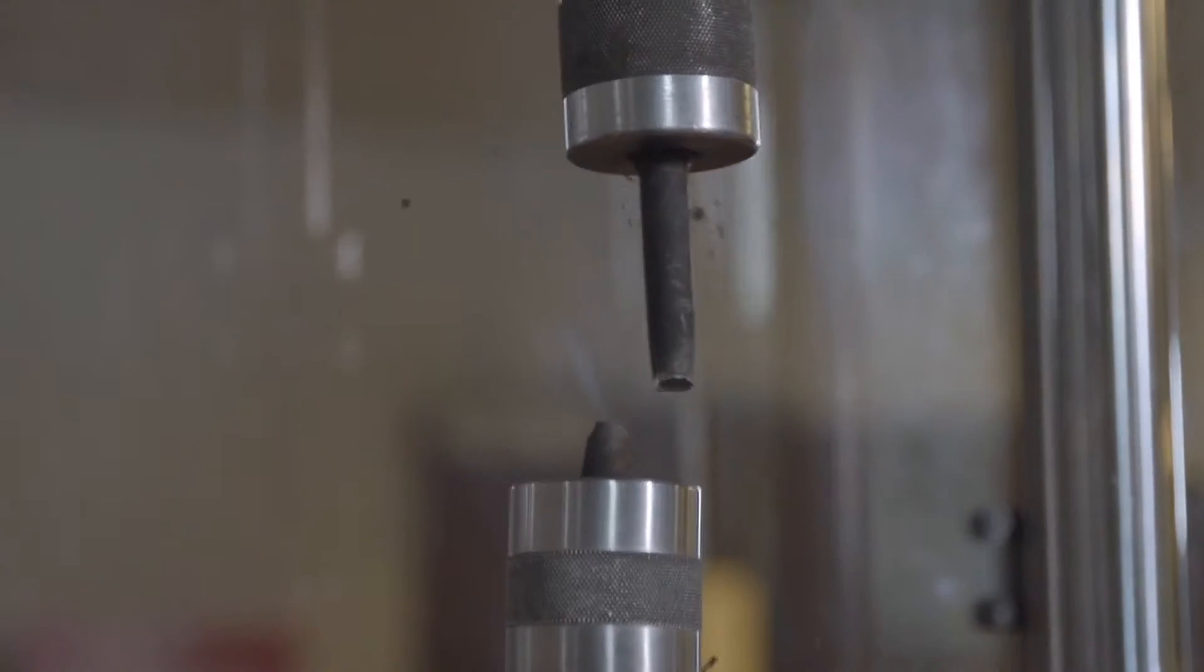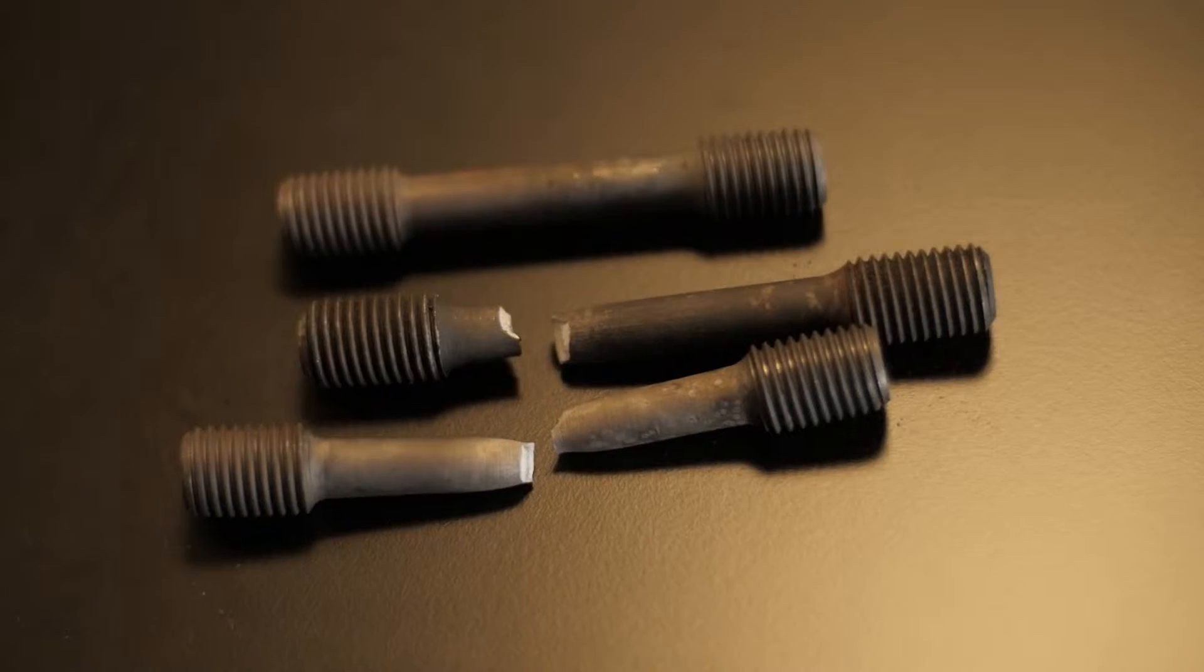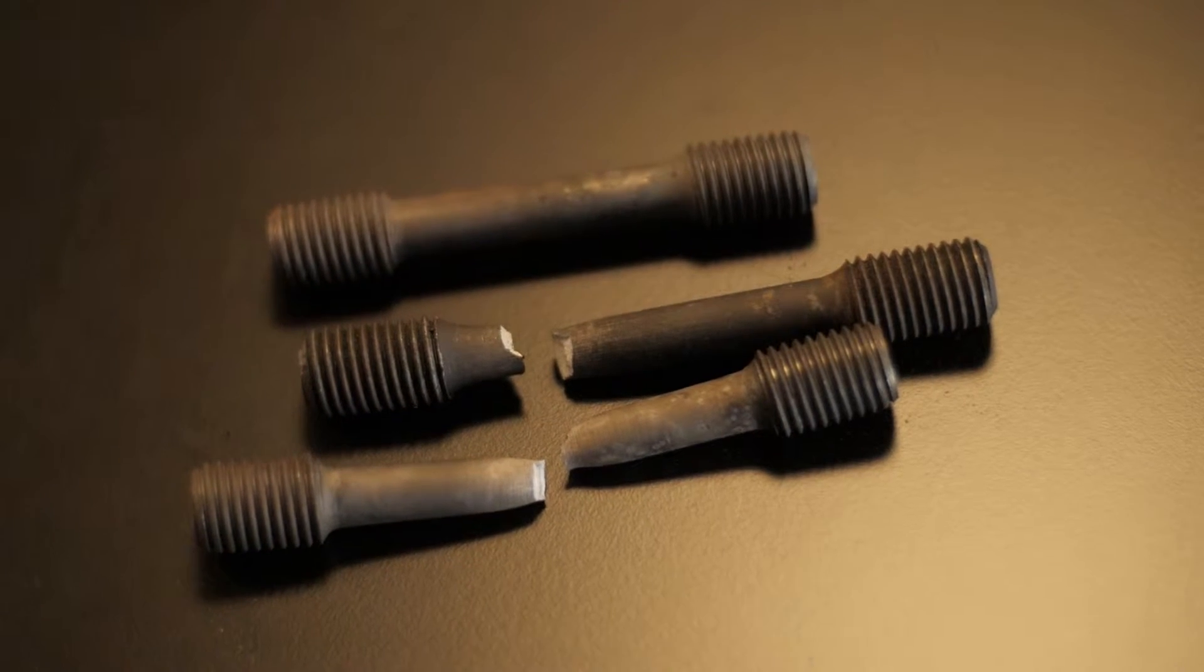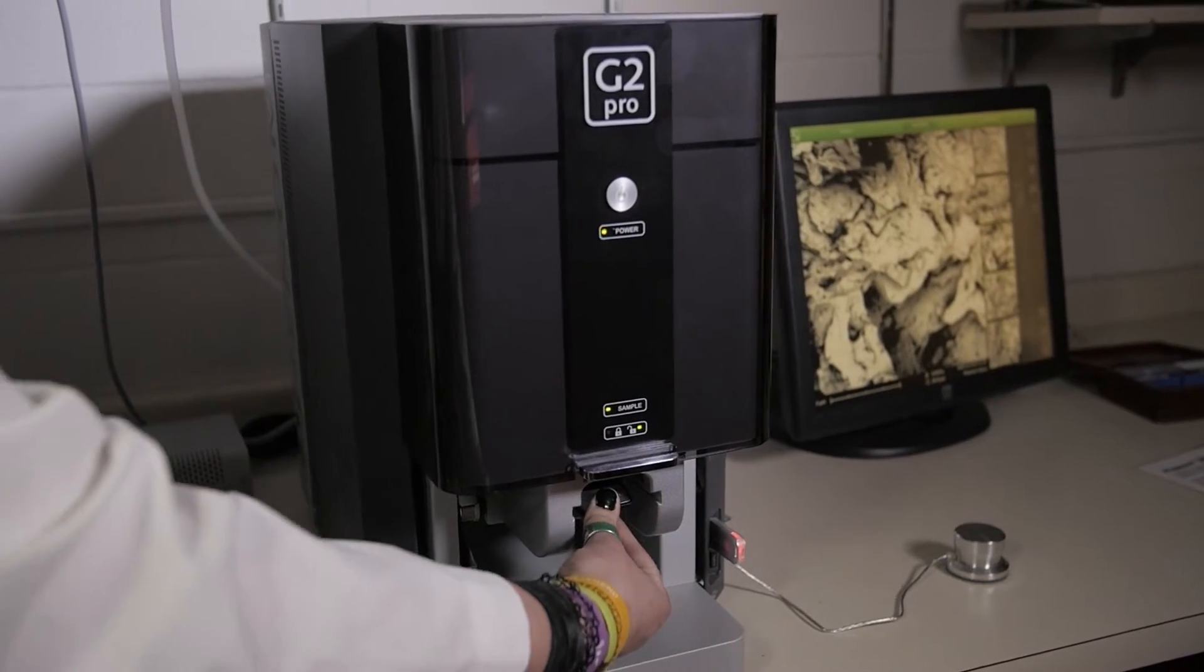The device measures how much force it takes to break each sample. After the samples break, students study the fracture surfaces with a scanning electron microscope, which shows how the differences in physical features extend to the microscopic level.